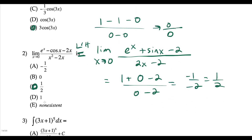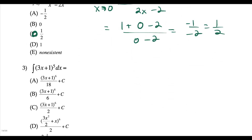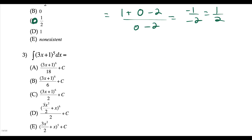Now we're moving on to the next question, which is a u-sub. It helps if you can do u-sub quickly. Anytime your u term is linear, something like 3x plus 1, that means we could skip the whole u-sub process. But let's pretend we don't know the shortcut.